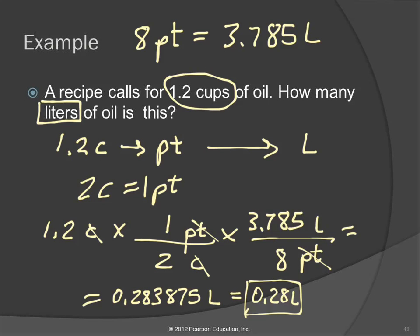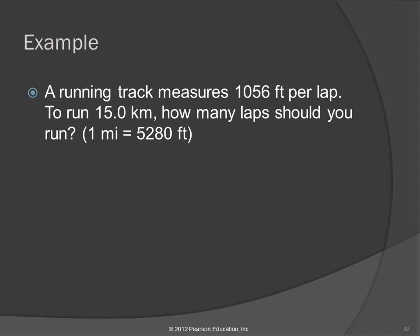If this was a multiple choice exam and you were looking at answers, the correct answer would be there, and 0.283875 might be there as well. If it's asking you for the correct number of significant figures, then you really have to get the correct number of significant figures. Some of them it's always 'choose the best answer.' Between 0.283875 and 0.28, which is the best answer? This one — 0.28 — is the best answer. I won't intentionally try to trick you like that, but sometimes I overlook things, so both could end up as choices. It does say choose the best answer, and 0.28 is the best answer.